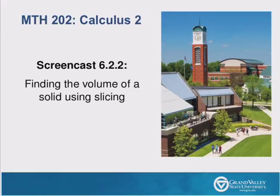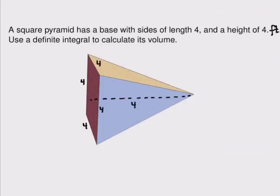Hello, and welcome to this screencast on finding the volume of a solid using slicing. Today we're going to look at this problem. A square pyramid has a base with sides of length 4 and a height of 4 feet. Use a definite integral to calculate its volume.